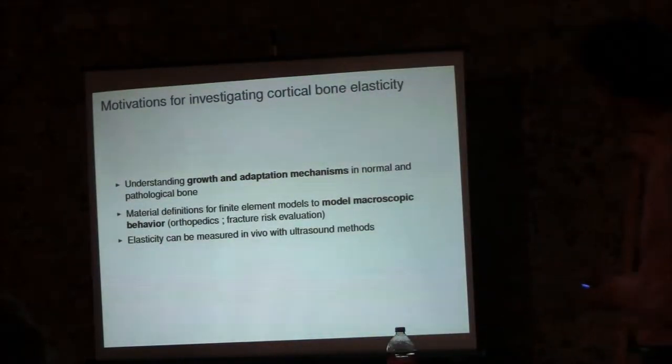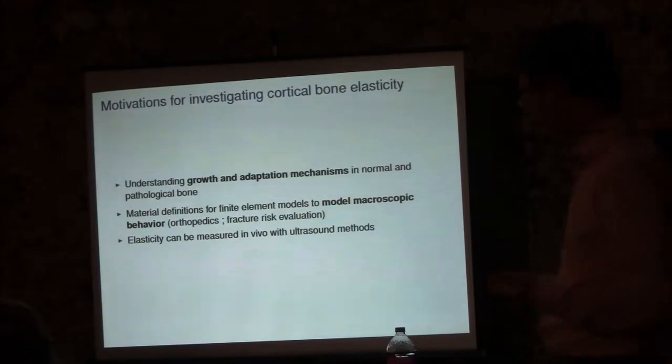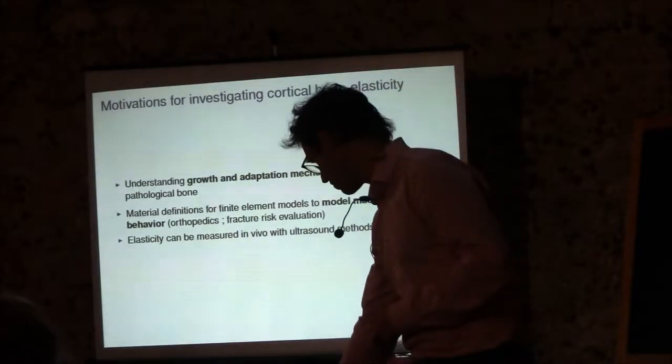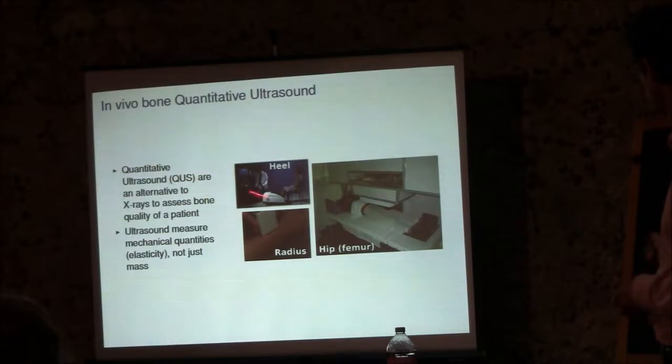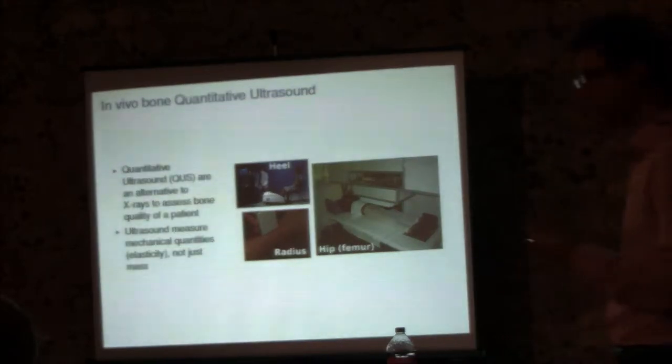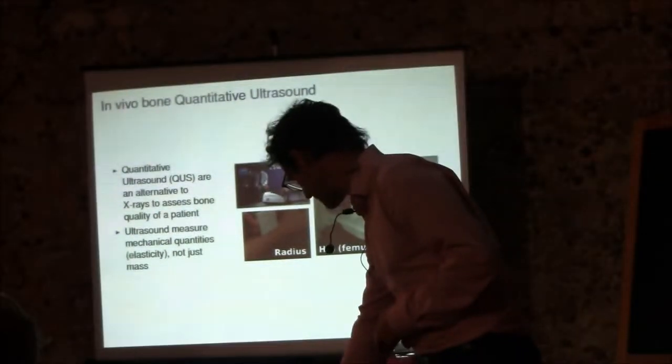The last point is very important for us in our lab. This is part of what we do in the lab, to design ultrasound methods to measure in vivo the quality of the bone. These are examples of the devices that we've been working with. This is measured at heel bone, so this is mostly trabecular bone. But here, there is a measurement at the radius. We measure a wave propagating in the cortex, and we can deduce the elasticity of the bone in vivo, and measurement can also be done to some extent at the femur.